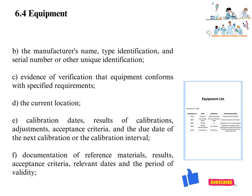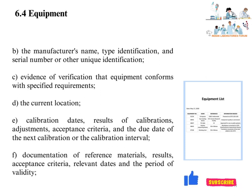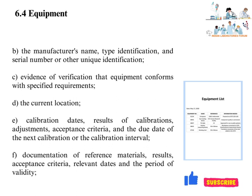Records shall also include the current location of the equipment in the laboratory; calibration dates, results, adjustments, acceptance criteria, and the due date of the next calibration or calibration interval — covered in the calibration schedule and respective calibration records; and documentation of reference materials, results, acceptance criteria, relevant dates, and period of validity, including reference standards used for calibration.